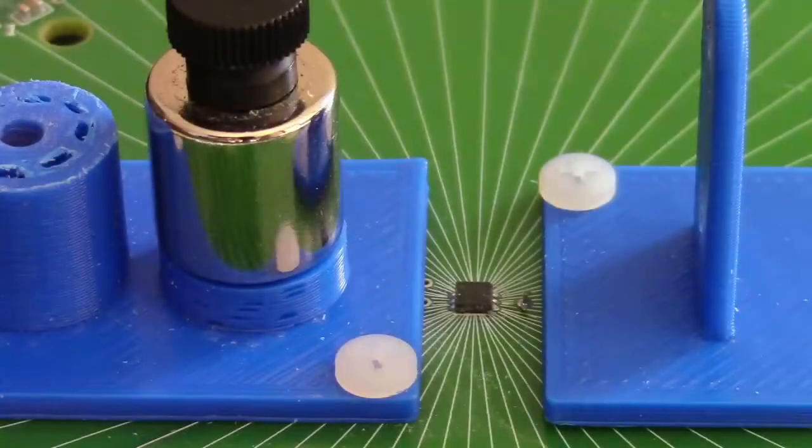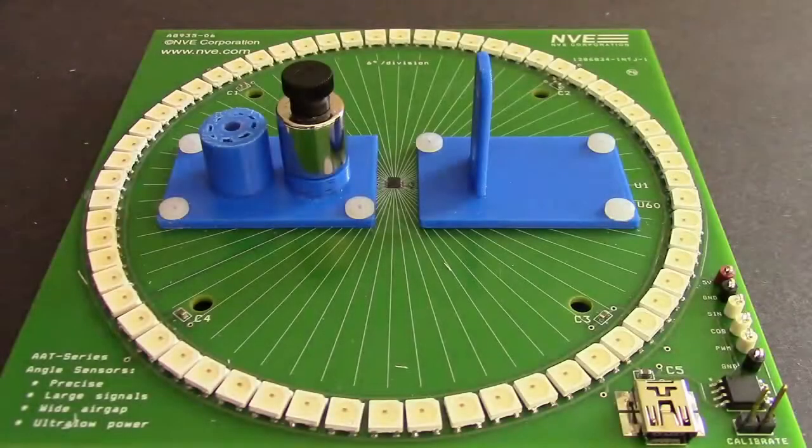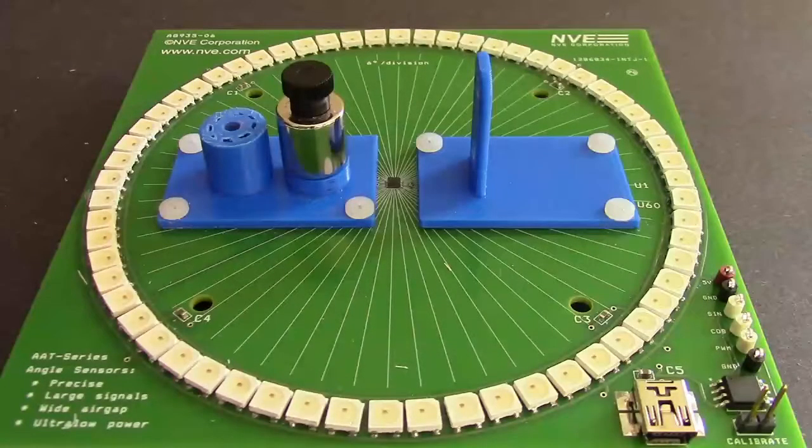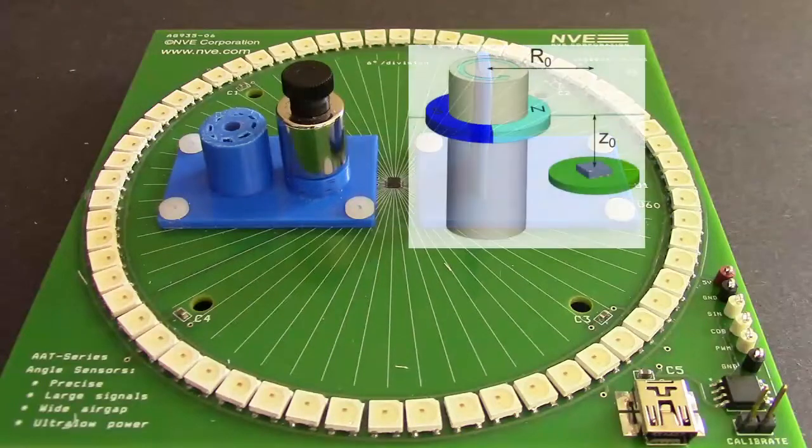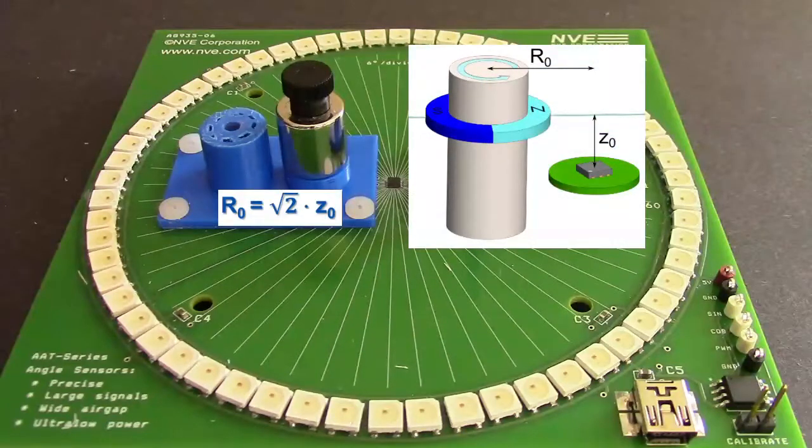While our sensors have robust air gap tolerances, finding the ideal location is important for achieving the best accuracy. With NVE angle sensors, this is easy. For the parallel plane configuration, just make sure R0 equals the square root of 2 times Z0.